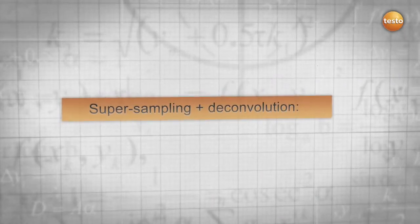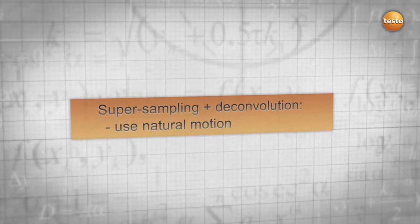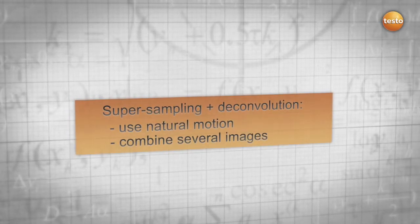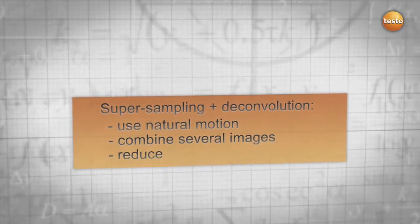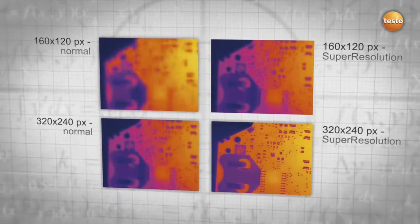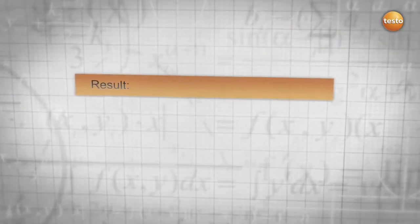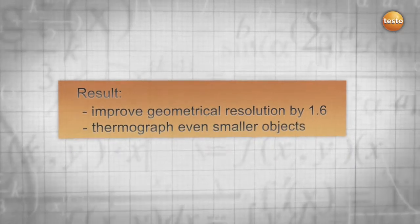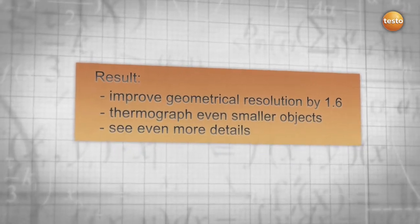The conclusion. With the aid of the natural movement of the hand, super-resolution combines all advantages of super-sampling and deconvolution into a new and revolutionary technology. As a result, super-resolution improves your resolution and allows you to thermograph even smaller objects and see more details.